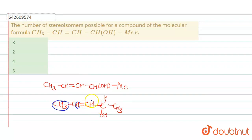One group is H and the other is the remaining chain. This means this is a center of geometrical isomerism — a geometrical center. Geometrical isomerism is possible across this double bond.